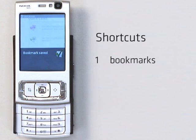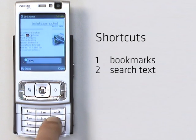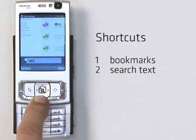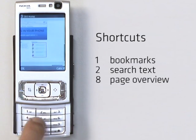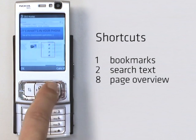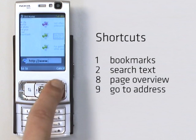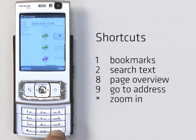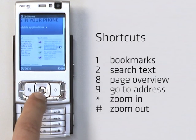Let's get back to using shortcut keys. 2 searches for text — you just enter a search term in the box, and if it's on the page it'll be highlighted as you type. Press up or down on the navigation to find the next instance. 8 goes to page overview, which we've already seen. 9 lets you type in a web address quickly. Asterisk zooms in, and the hash key zooms out.